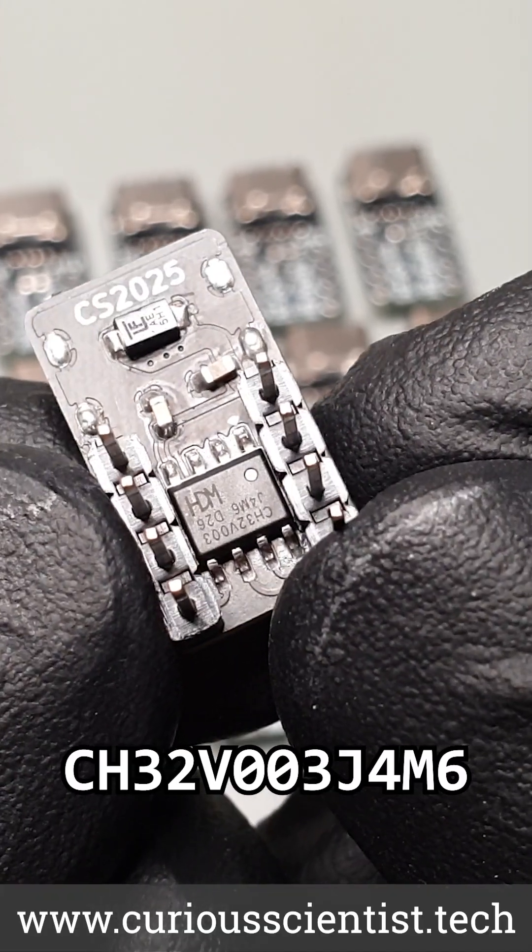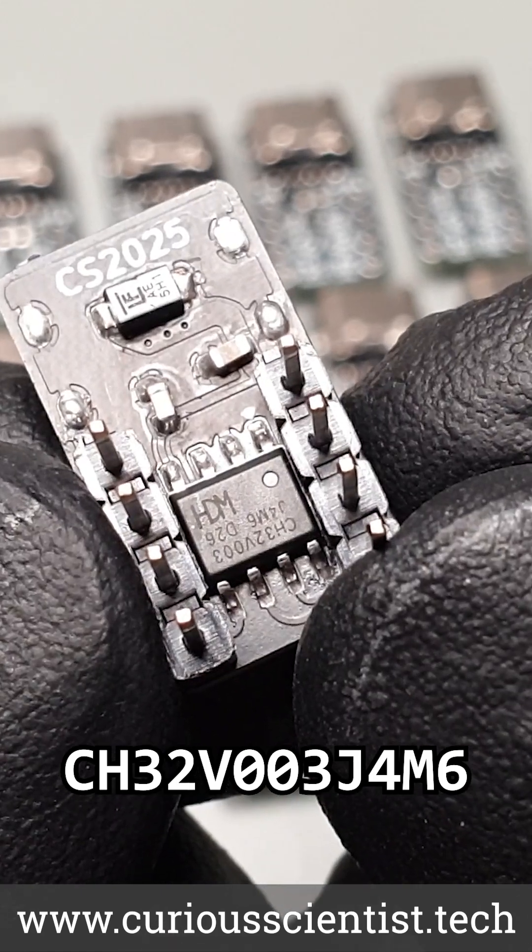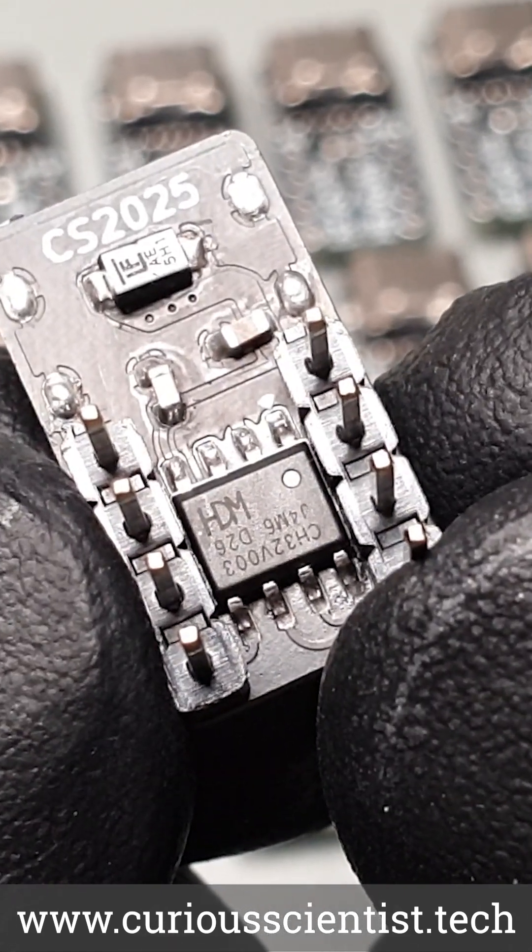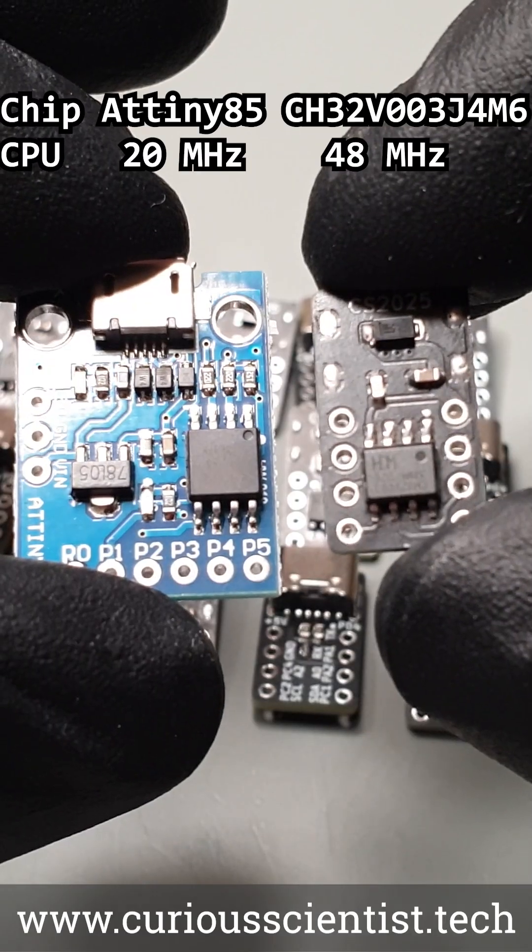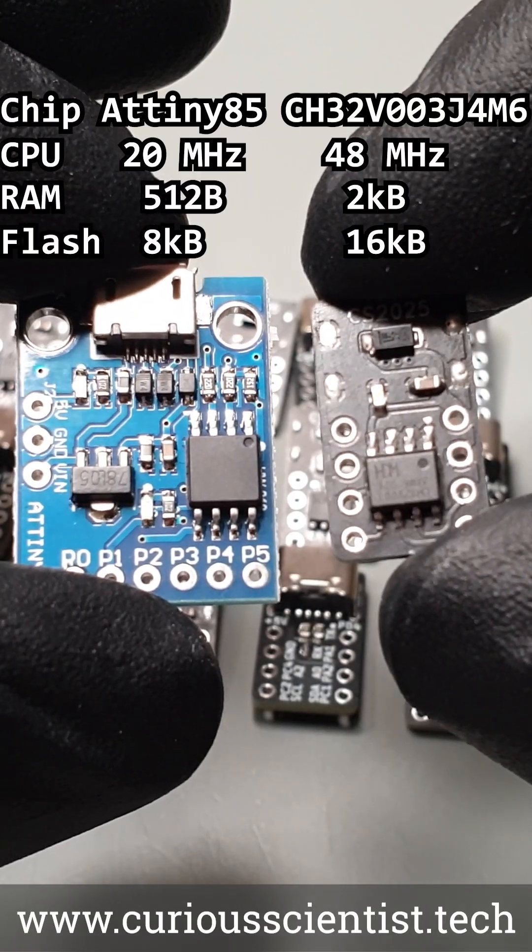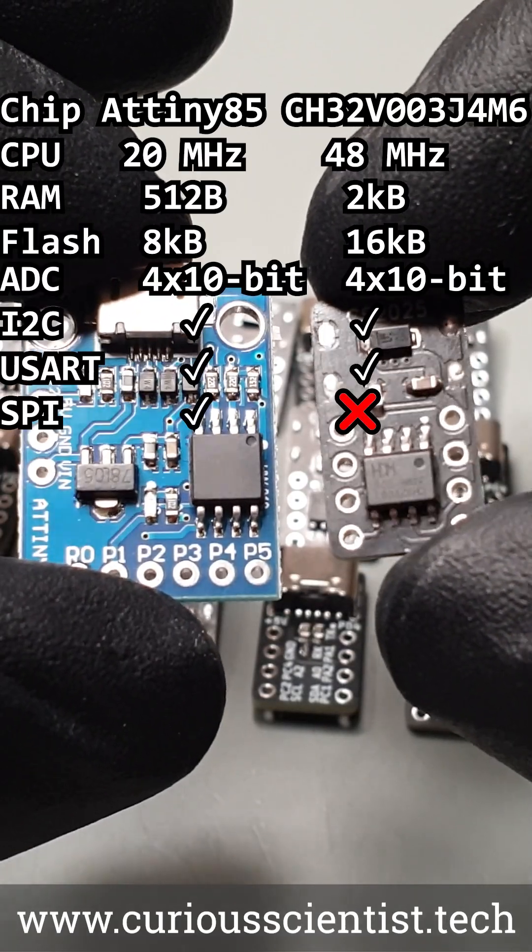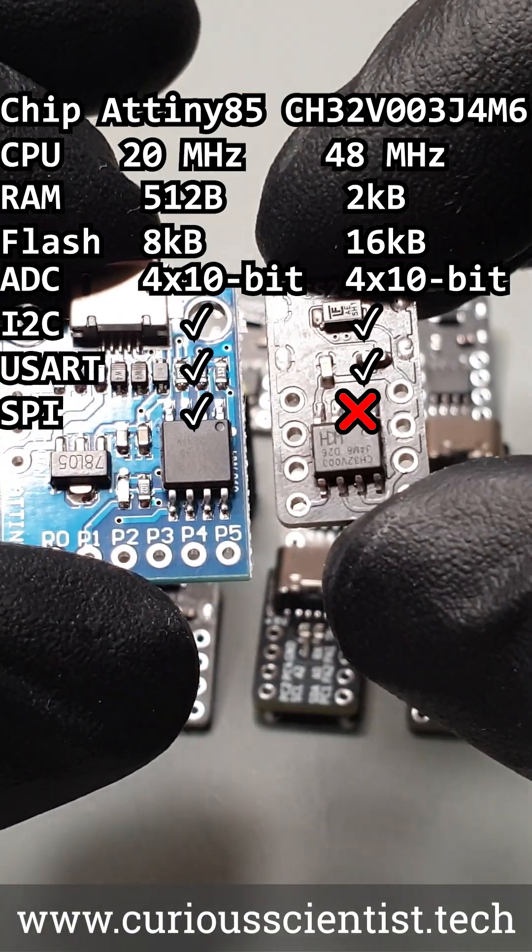I used the CH32V003J4M6 chip, which is a very good alternative to replace the ATtiny85 microcontroller. It has a better processor, more memory and flash, and the same package. The only downside is that it does not have an SPI peripheral.